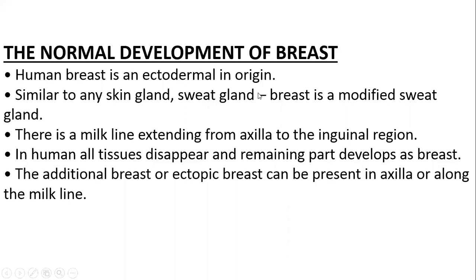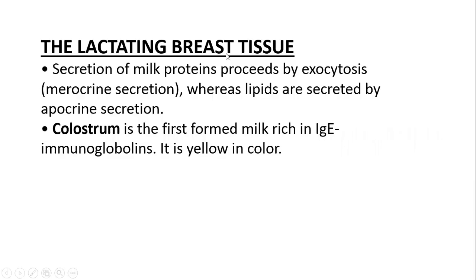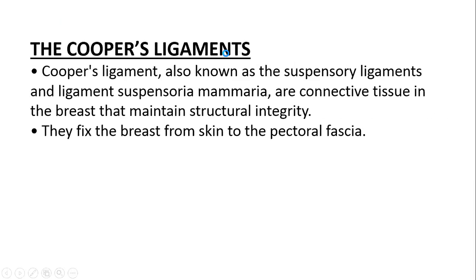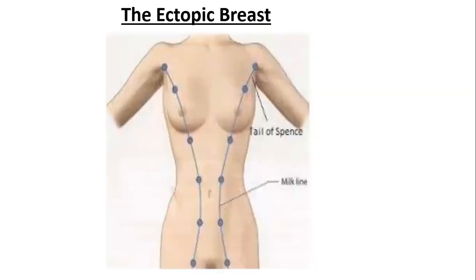Breast is basically a modified sweat gland. There is a milk line that extends from the axilla to the inguinal region, and breast tissue can develop anywhere along this line.